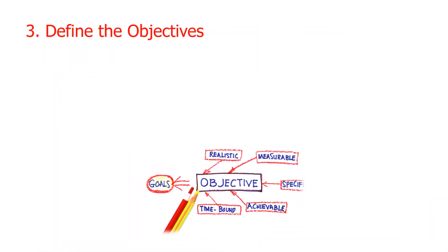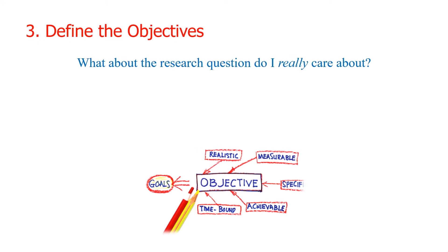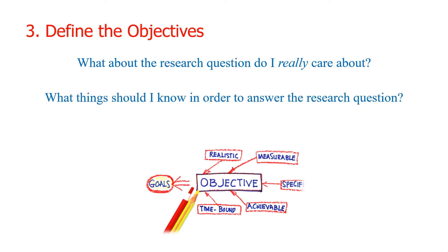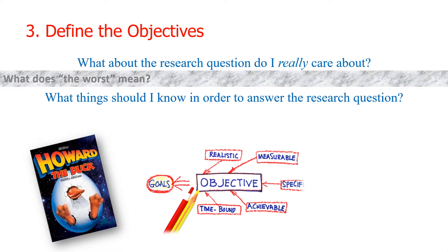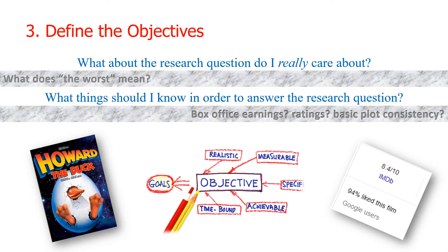Step 3: Define the objectives. What about the topic do I really care about? This can be answered through your research question and general objective. What things should I know in order to answer the research question? That can be answered by your specific objectives. For our study, you have to define what 'the worst' means — is it related to box office earnings, ratings by critics or viewers, or just basic plot consistency?